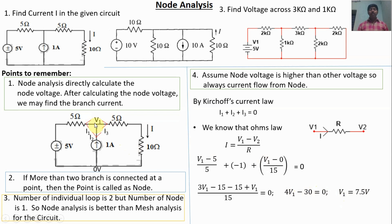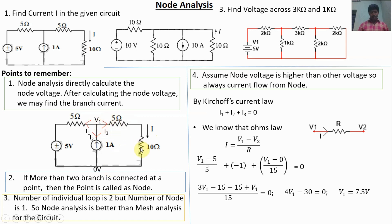We have calculated the node voltage V1. But our objective is to find the current I. The current I equals V1 minus 0 divided by 15, which is V1 divided by 15. V1 is 7.5V, so I equals 7.5 divided by 15, which equals 0.5 Amps.